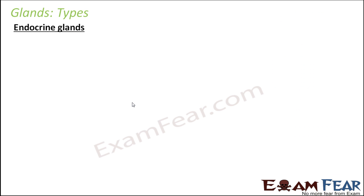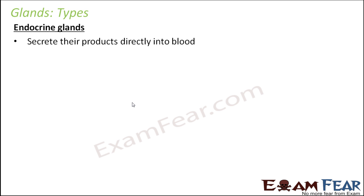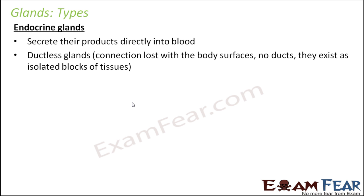The next type is endocrine glands. These are ductless glands — there are no ducts involved. These glands secrete their products directly into the blood. Since they secrete into the blood, they don't need to reach the surface, so no ducts are required. Endo means inside. They exist as isolated blocks of tissues, with no connection to the body surface.